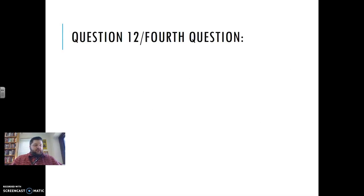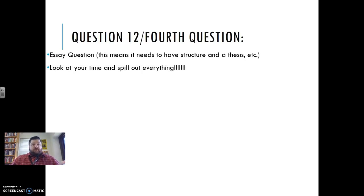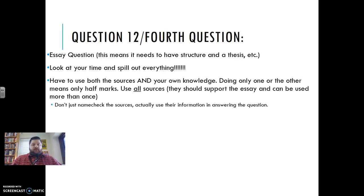Okay. The last question then on paper one is always an essay question. It means it needs to have structure, have a thesis, all those things. This one is, mutual fear led to increasing tensions between the U.S. and Japan. Using the sources and your own knowledge. To what extent do you agree with this statement? So I would look at how much time you have left. Try and get everything out that you know about. This is the one where you want to bring in your background knowledge. So you want to not only include what's in all the documents or as many as you can get in there, but also your own knowledge.